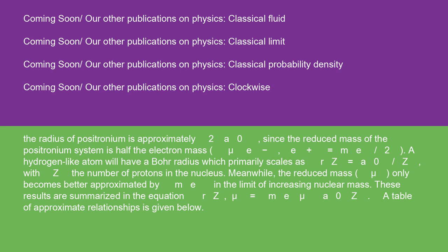A hydrogen-like atom will have a Bohr radius which primarily scales as rz = a₀/z, with z the number of protons in the nucleus. Meanwhile, the reduced mass μ only becomes better approximated by mₑ in the limit of increasing nuclear mass. These results are summarized in the equation rz,μ = (mₑ/μ)(a₀/z). A table of approximate relationships is given below.